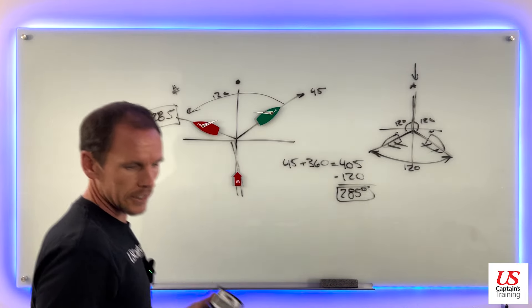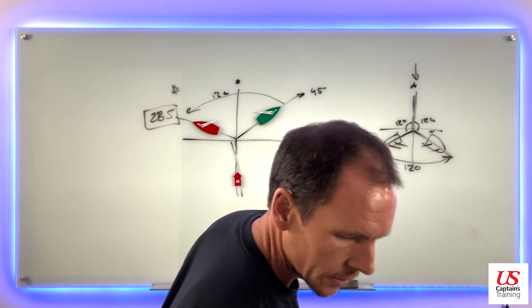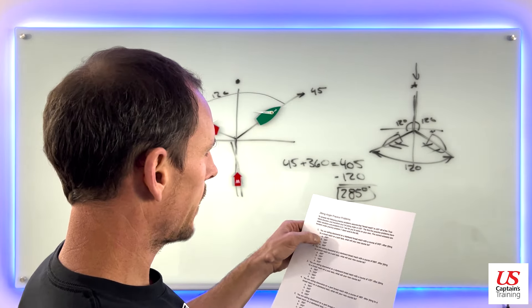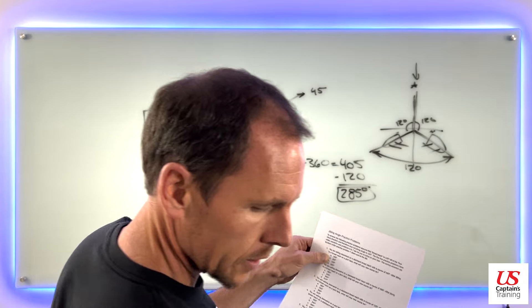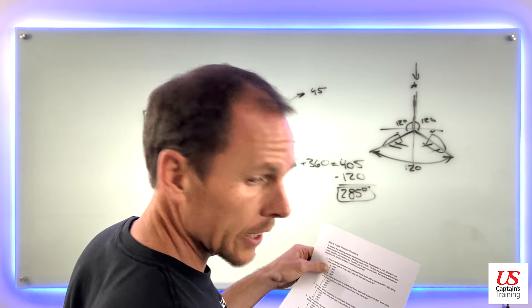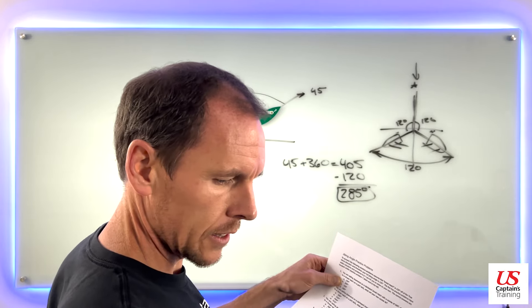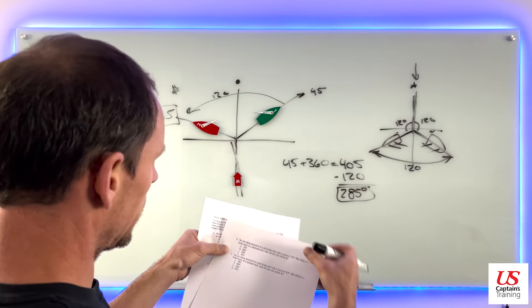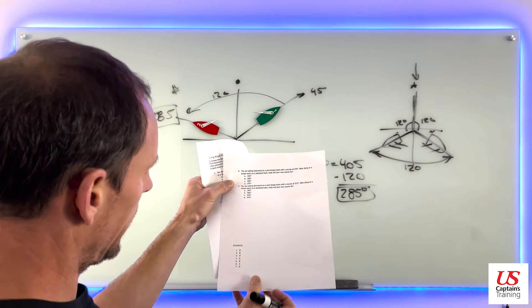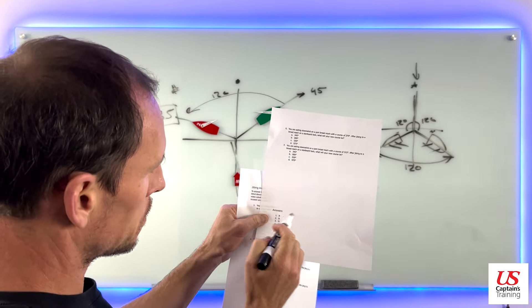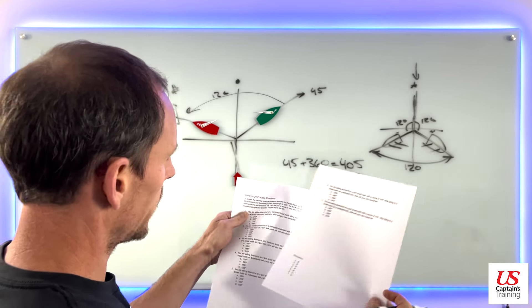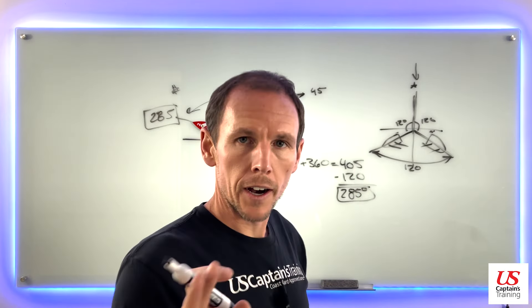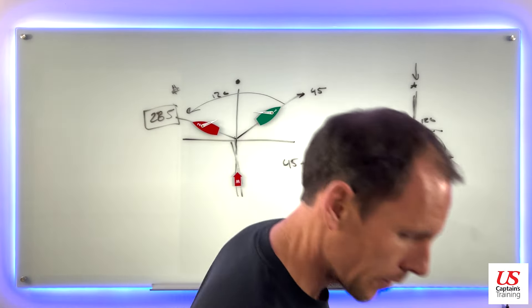285 is your new course. Let's check — 285 is answer B. Number one is B, 285. Let's move on to the second one.